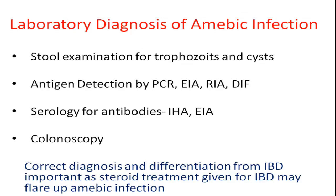Laboratory diagnosis of amoebic infection is generally carried out by examination of stool for presence of trophozoites and cysts. Newer technologies for antigen detection include PCR, ELISA, RIA, and direct immunofluorescence. Serology for antibodies to amoebic organisms is usually carried out in extra-intestinal amoebiasis and includes indirect hemagglutination test and ELISA. Finally, colonoscopy and colonic biopsy allow direct demonstration of amoebic trophozoites.